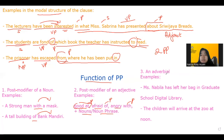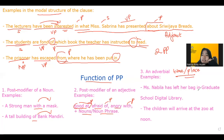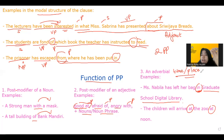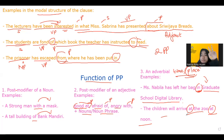Last but not least is the adverbial function. Adverbial means the prepositional phrase explains time or place. For example, 'Ms. Nabla has left her bag' — 'in' and 'at' are prepositions indicating the specific place, the library, where she left her bag. The second example: 'The children will arrive at school' — a place — 'at noon' — a time. So there are two prepositional phrases here. And I think that's all. Thank you very much for watching. Wassalamualaikum warahmatullahi wabarakatuh.